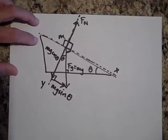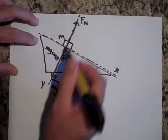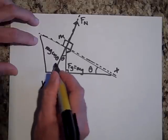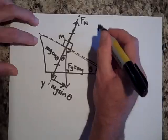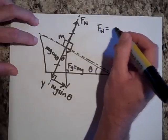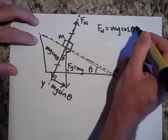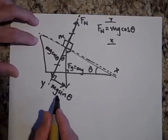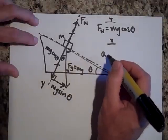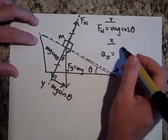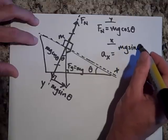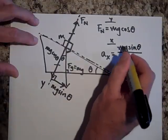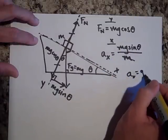In the y direction the object isn't accelerating — it stays on the plane — so the normal force must equal mg·cos(θ). In the x direction, nothing balances the gravitational component, so: acceleration in x = net force in x / mass. The mass cancels, giving acceleration in x = g·sin(θ).